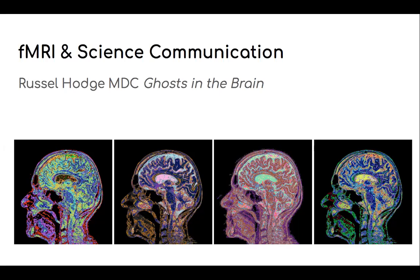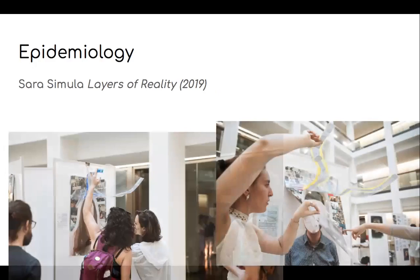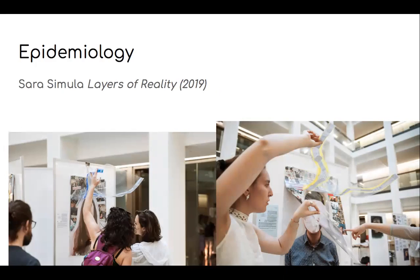Staying on the theme of reflexivity in science, I want to jump to our next data point: epidemiology. Sarah Simula in 2019 created this lovely piece called Layers of Reality. It was a piece to take into consideration the rich and personal individualized experience of mental health, specifically schizophrenia in different cultures, because people are differentially affected by schizophrenia — the symptoms are different in different parts of the world, even though it's under the same diagnosis. She was raising awareness of the many layers that you could literally physically flip through. Does neuroscience really take into account all of our layers?